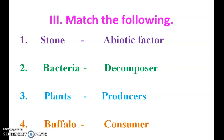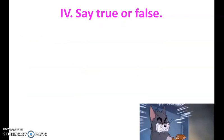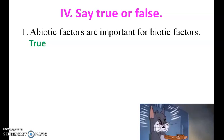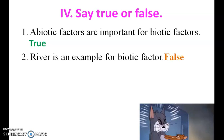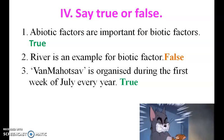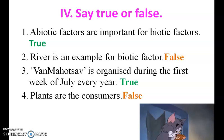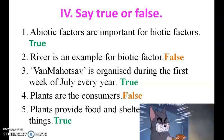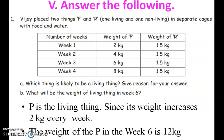Match the following answers: Stone - abiotic factor; Bacteria - decomposer; Plants - producers; Buffalo - consumer. True or False: Abiotic factors are important for biotic factors - True. River is an example for biotic factor - False. Van Mahotsav is organized during the first week of July every year - True. Plants are the consumers - False. Plants provide food and shelter - True.